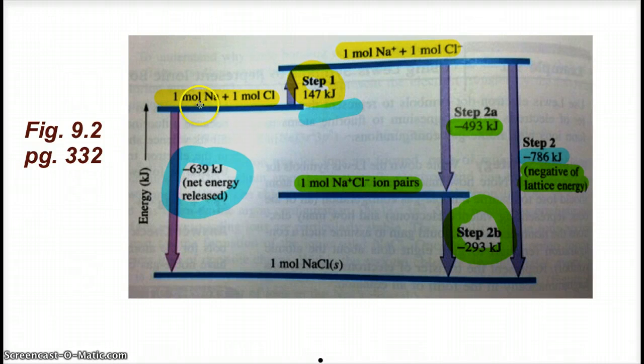But again, when we form an ionic compound, we must form the ions and then we get energy back. Because that crystal lattice is a very, very strong, has very, very strong bonds. And those forces, the columbic forces of attraction holding those ions together is well worth the energy investment to make the ions.